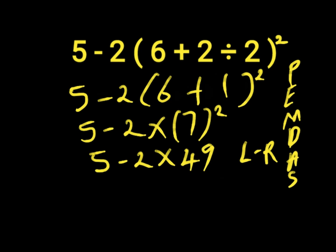So, we have subtraction and multiplication here. We'll first do multiplication because it comes first before subtraction. So, 2 times 49 will give us 98. Then we'll put down our 5 minus 98. 5 minus 98 is minus 93.